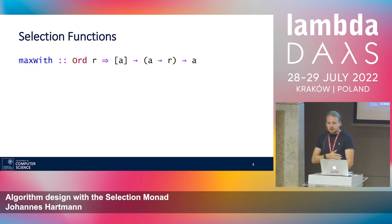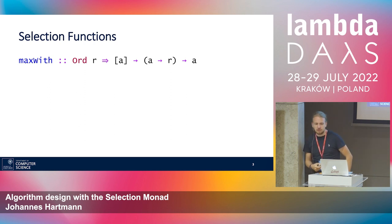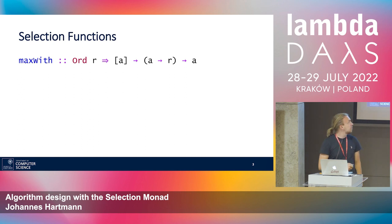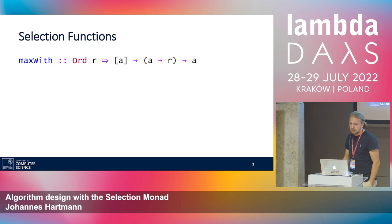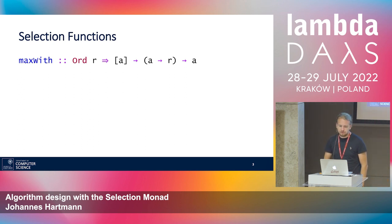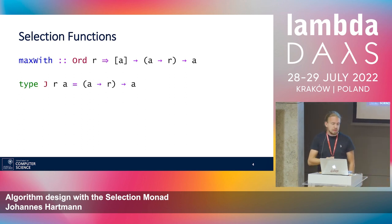We can then abstract and define the type of the selection monad, JRA, which abstracts over the later part: given a judgment from A to R, it returns an A. With that type we can rewrite the maxWith function in that way.